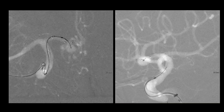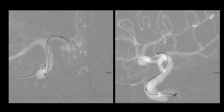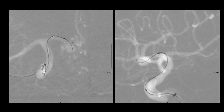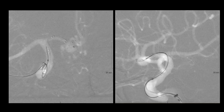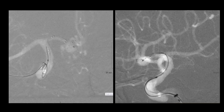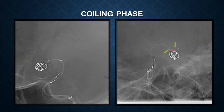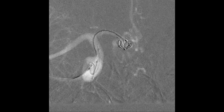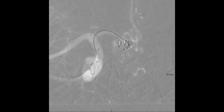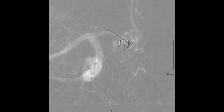The device is then traversed with the microwire, and the aneurysm is accessed with the microcatheter. The framing coil has been placed, and the arch markers can be seen demonstrating the support for the coils. The aneurysm is then fully packed with coils to satisfaction.